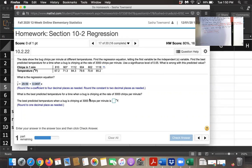Then we're asked for the best predicted temperature for a time when a bug is chirping at a rate of 3,000 chirps per minute. Well, that depends entirely on whether we have evidence of a correlation. So we need to take our r value and consider the alpha value that we have and the sample size that we have to find the critical values. And then compare the absolute value of r to the absolute value of the critical values. So to do that, I'm going to come back over here to my Excel spreadsheet.